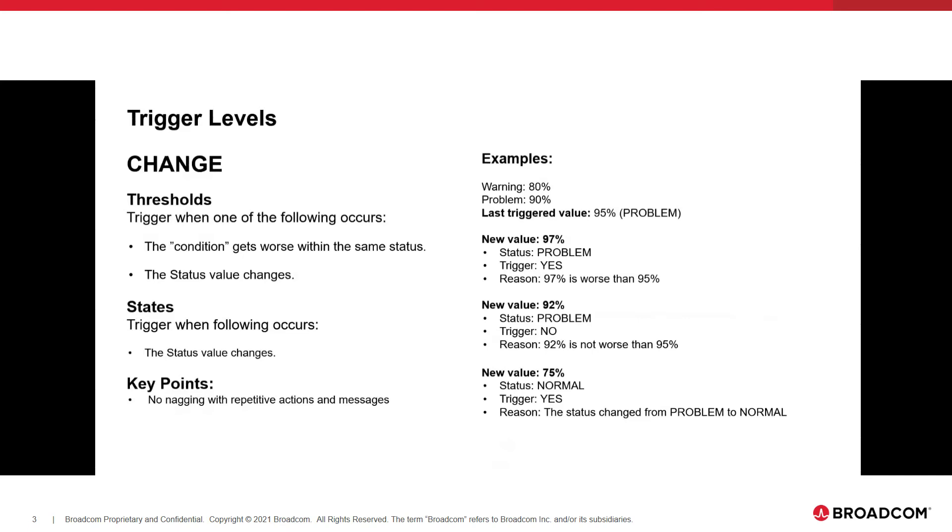In this particular case, we're going to do a quick example on the right-hand side. My example, and this will be the starting example for each of my three bullets here. My threshold is defined with warning at 80%, problem at 90%. The last triggered value is 95%, known as problem. Last triggered value is the last time we did a notification to somebody, or the actual actions were triggered. In our first test here, the new value is 97%, that would be evaluated to be a problem. Question is, does it trigger? The answer is yes. Now, the question is, why? Well, 97% is worse or greater than 95%, so the problem essentially got worse, so we are going to notify you again. That falls into the first bullet on the left-hand side that says the condition got worse within the same status.